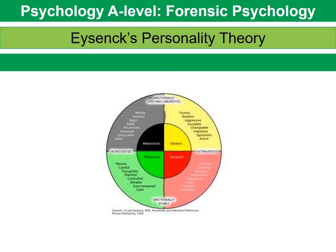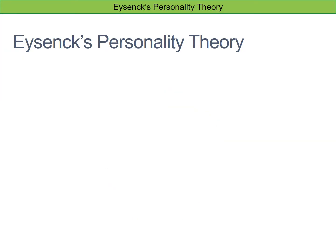The second explanation for offending behaviour that we're going to look at is based on Eysenck's personality theory, which is one that you may already be familiar with. Eysenck's personality theory is not a theory which was designed to particularly profile criminals — it is just a general personality theory that could encompass everybody. Eysenck said that everybody fell somewhere on three dimensions.